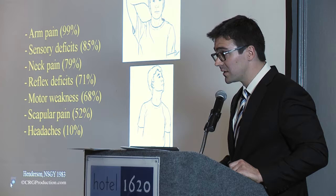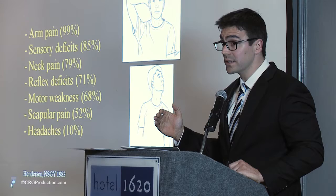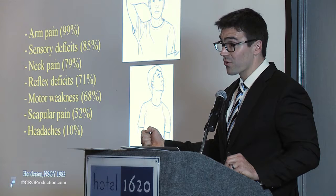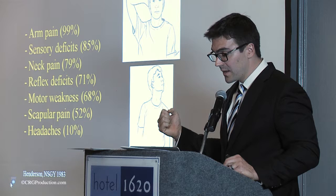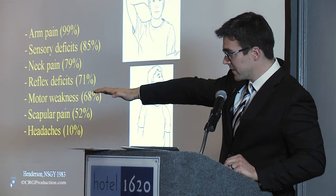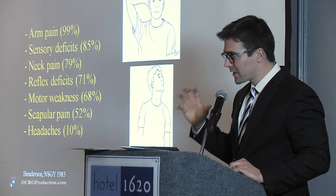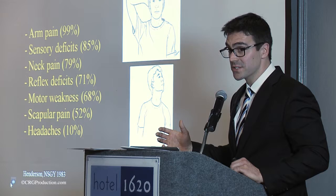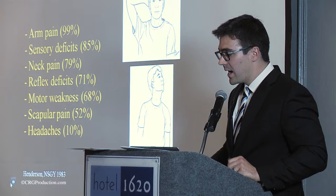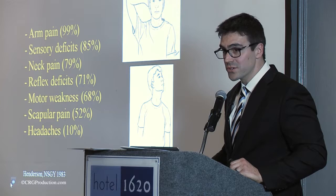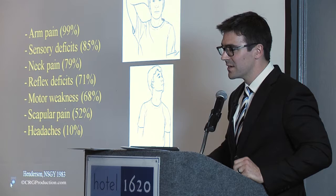Motor strength is graded on a five-point scale: 5 is completely normal; 4 is a broad category of not quite normal but relatively strong; 3 means able to resist gravity only; 2 means movement only when gravity is eliminated; 1 is a flicker; and 0 is complete flaccid paralysis. The grade 4 category is very broad, so you really have to have patients resist you. Sometimes patients notice a deficit that is difficult to detect — for example, a younger guy notices something wrong with the triceps during push-ups even though it is hard to elicit on exam.